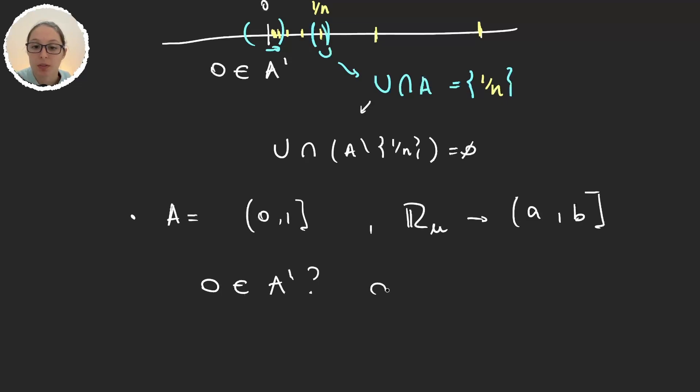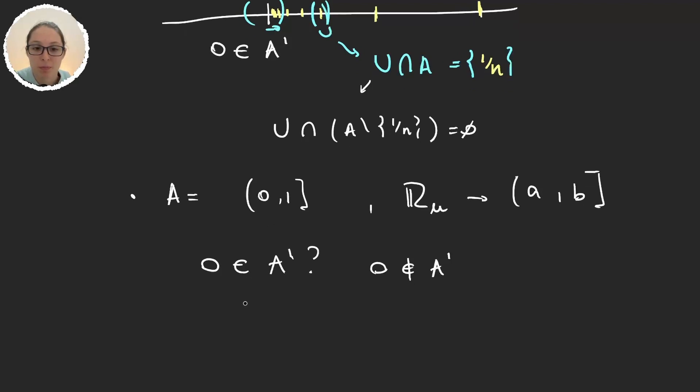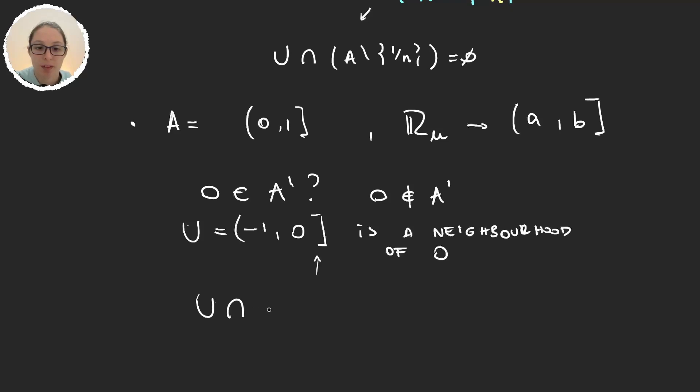Well it is not. 0 is not an element in A'. Why? Well very simple. [-1, 0] (closing 0) is a neighborhood of 0, because now we are considering the upper limit topology. So we are allowed to take intervals with a closed right extreme. And if we call this set U, then U ∩ (A \ {0}) - well 0 wasn't in the set in the first place - this one is empty. And so 0 is not a limit point of A.